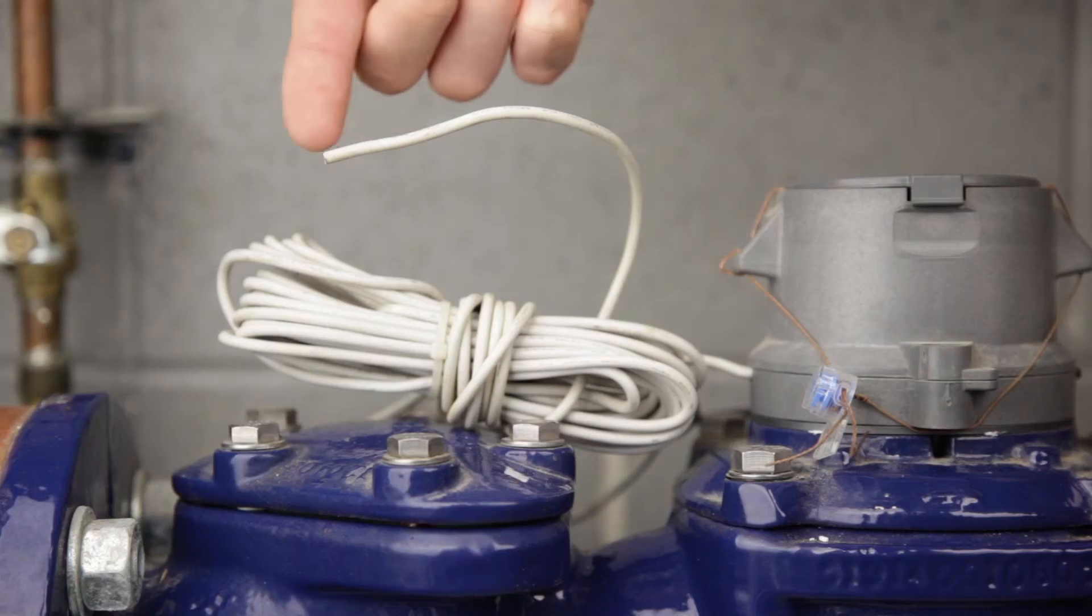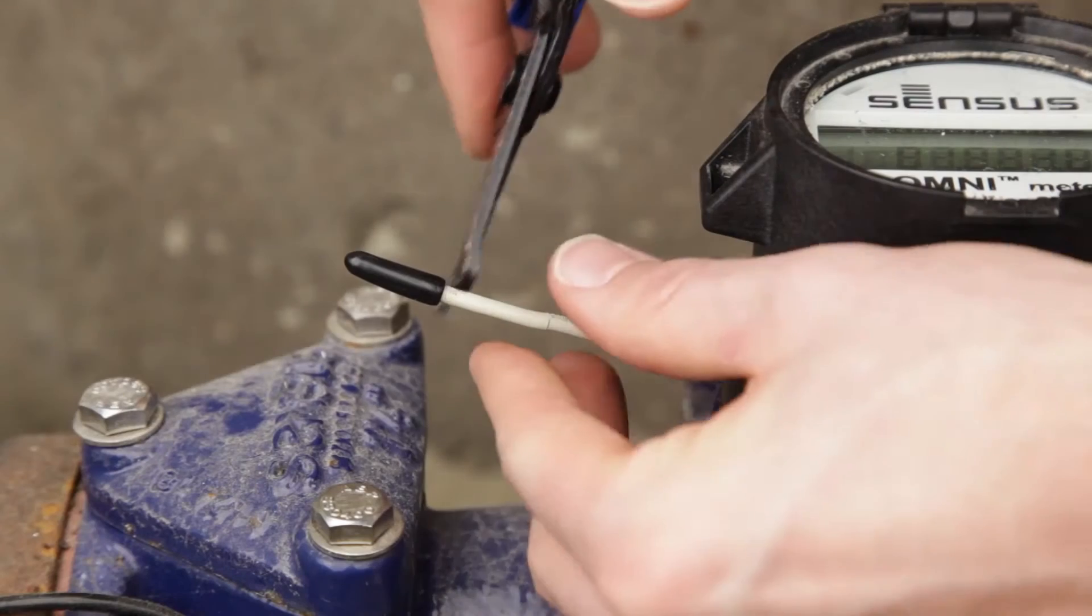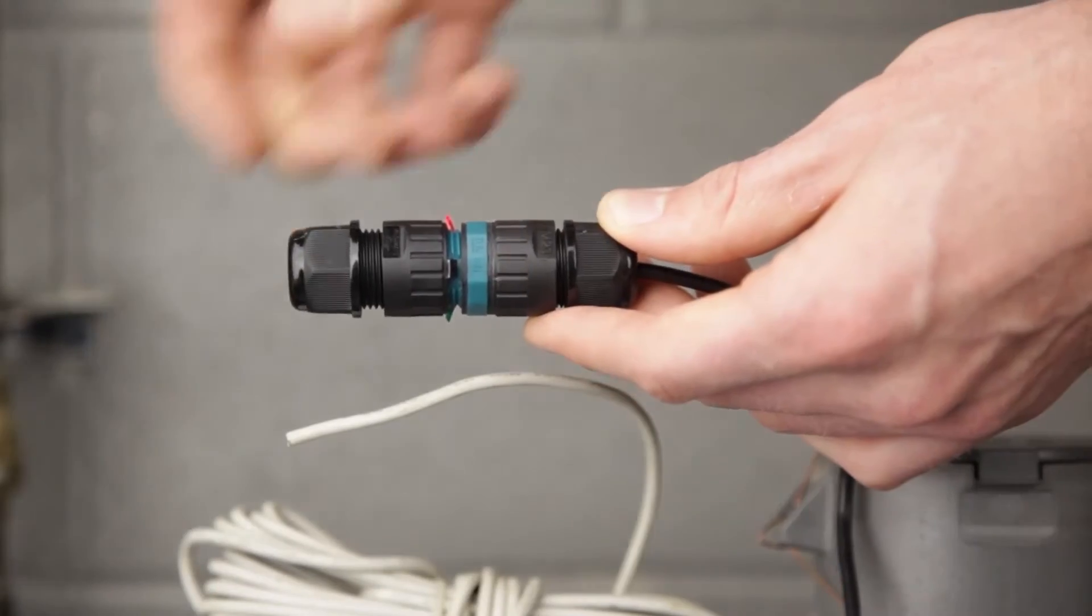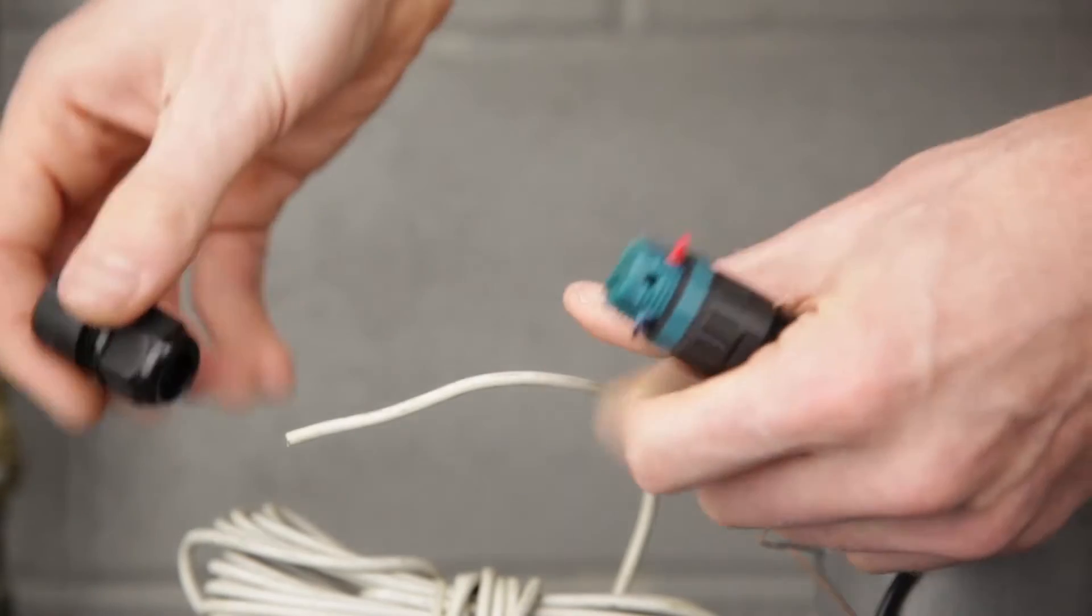Find the white-gray pulse output cable. If there's a black cap, just slide or cut it off. Push the pulse output cable through the connector.